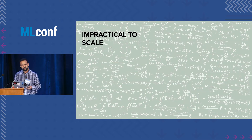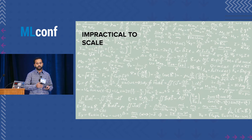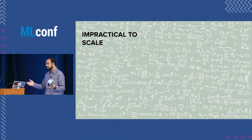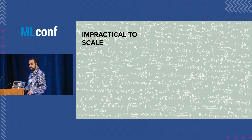With every new extra random variable we were adding, the math was becoming extremely complex. It became impractical to scale, and we soon realized we needed a better alternative so that going forward, capturing more context would remain manageable and scalable.